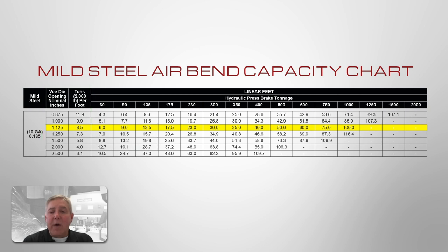A couple of your questions are answered in this chart. First is the lower die — the V opening — which is important, and this tells you which one to use. The second part of the question was the tonnage calculation: using that V die and that material would take eight and a half tons per foot to bend.